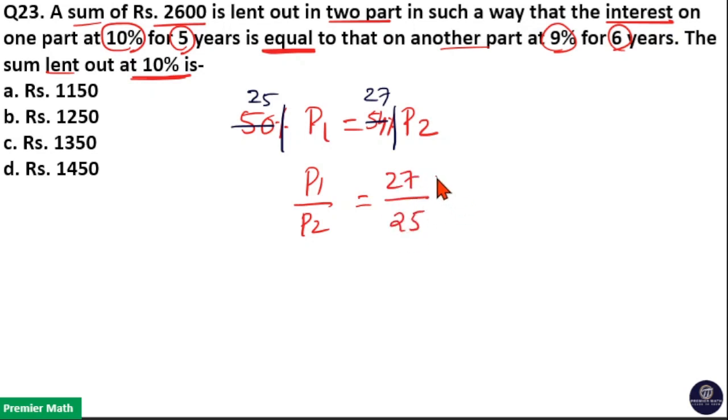If I add these two parts, 27 plus 25 is equal to 52 parts. This 52 parts is equal to total sum 2600.